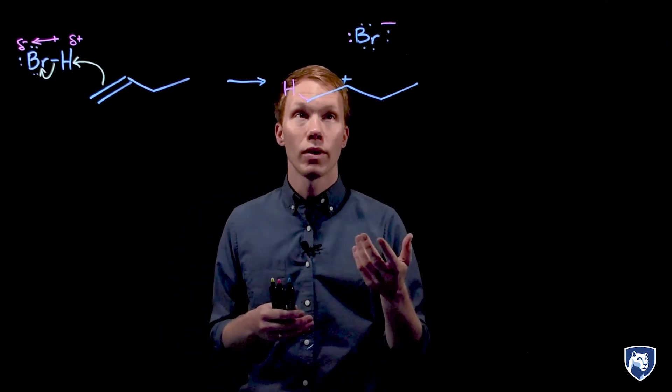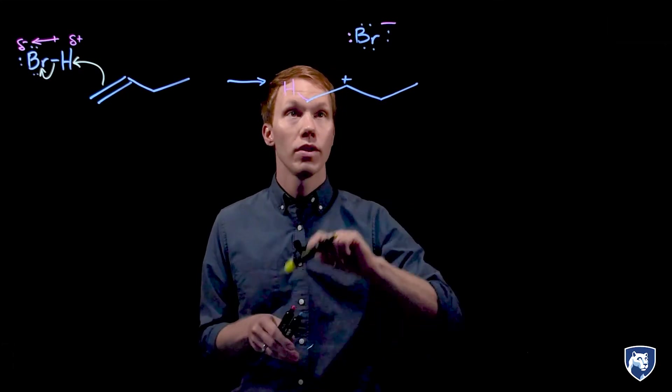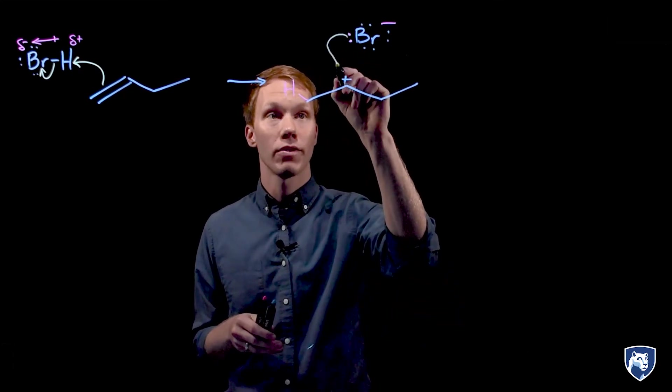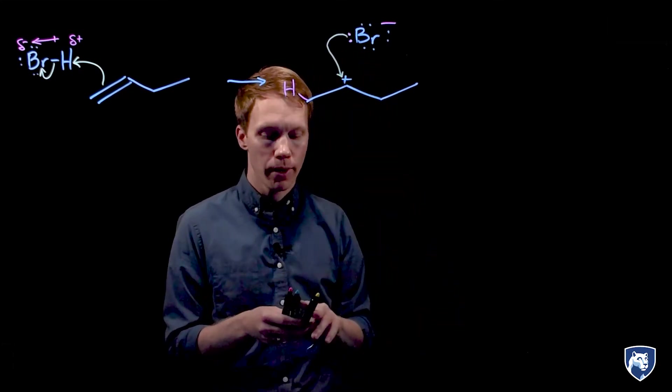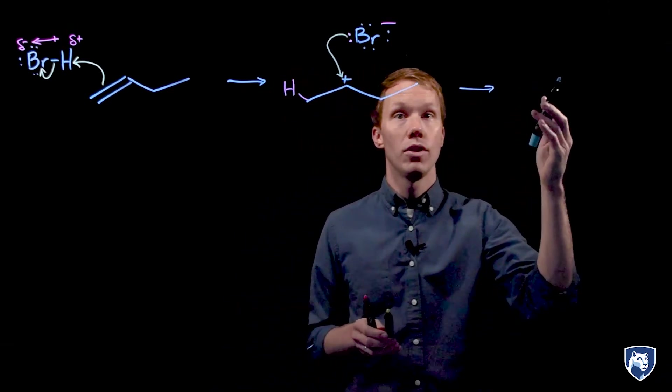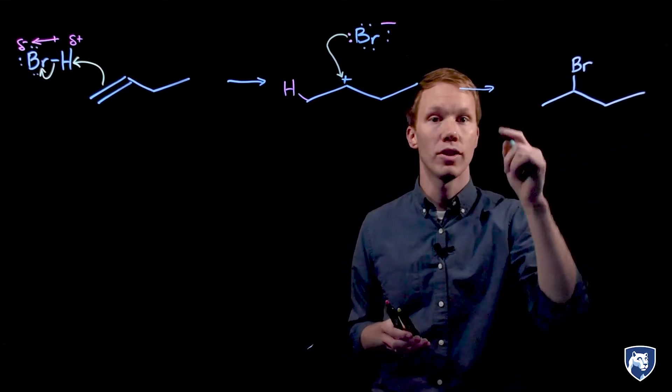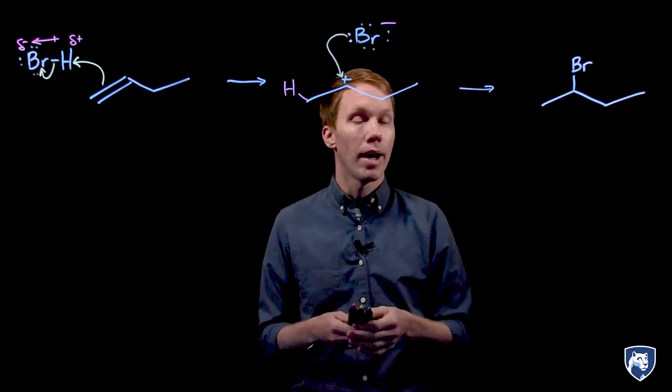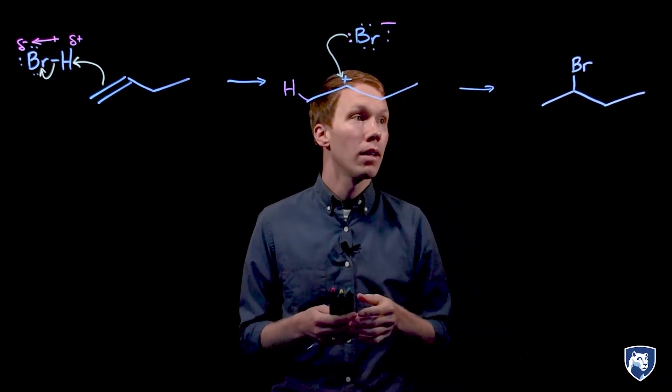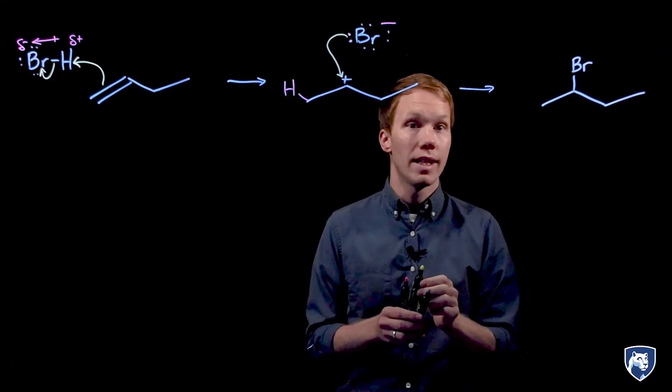The bromide ion is the nucleophile. It has that negative charge and lone pairs of electrons. So the nucleophile will attack the electrophile, the electron deficient carbocation. This forms a new bond between carbon and bromine. I'll go ahead and leave off the hydrogen as it's implied by the bond line structure. This is our major product that we observed in the lab.